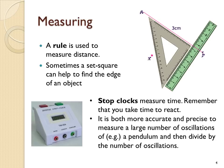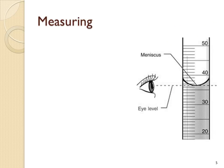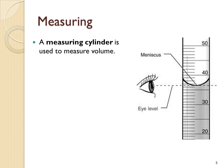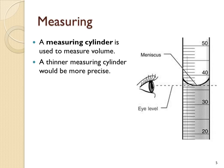It can be more accurate and more precise if you measure a large number of oscillations — for example, a pendulum swinging back and forth. If you count 10 oscillations and divide by 10, you get a more accurate measurement for one oscillation. You use a measuring cylinder to measure volumes of fluids, and the thinner the measuring cylinder, the more precise it is, giving you smaller graduations on the scale.